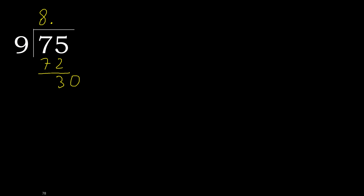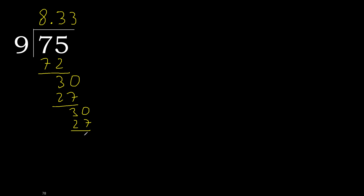30. 9 multiplied by 4 is greater, so multiplied by 3 gives 27. Subtract — complete. 30. 9 multiplied by 3, subtract, complete.